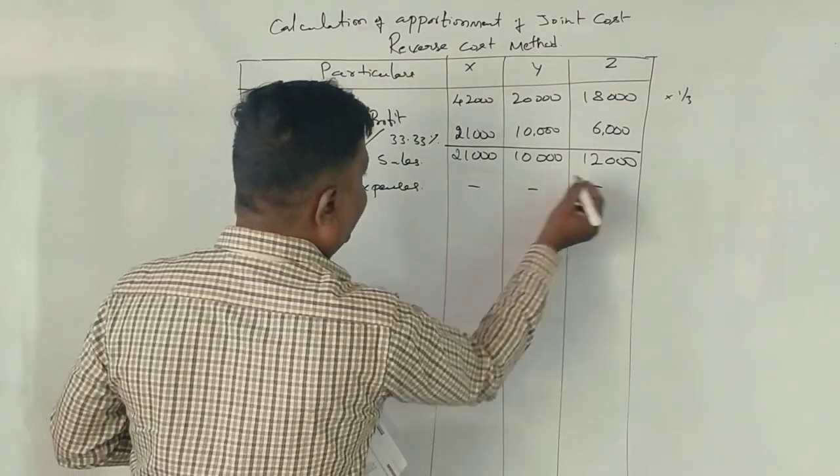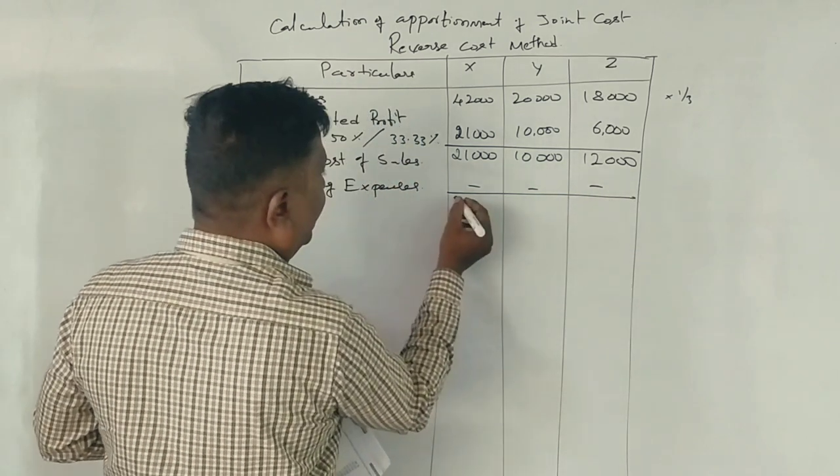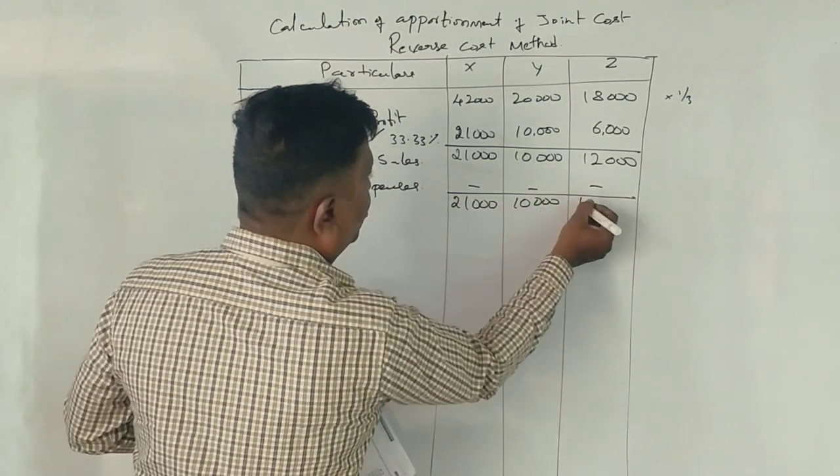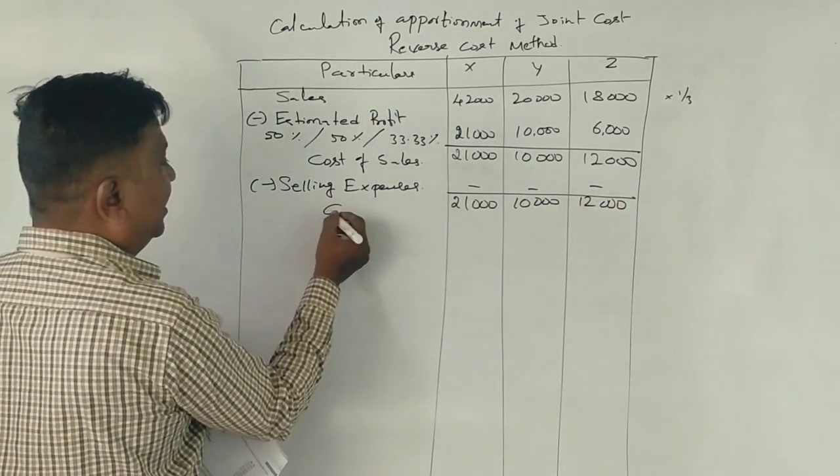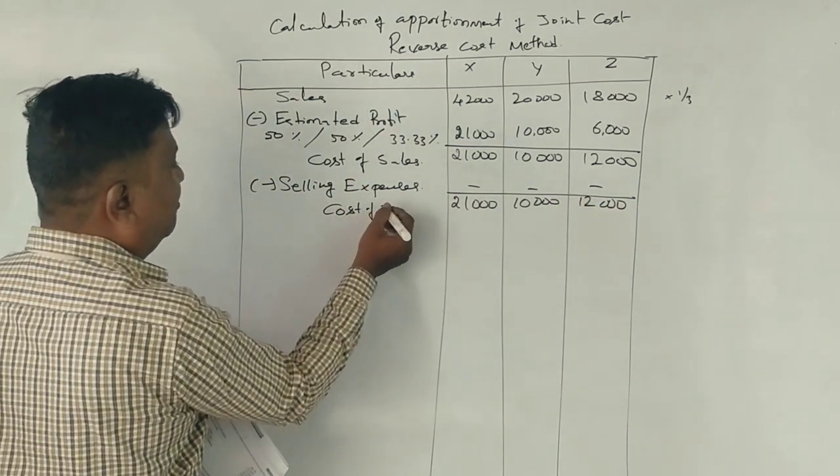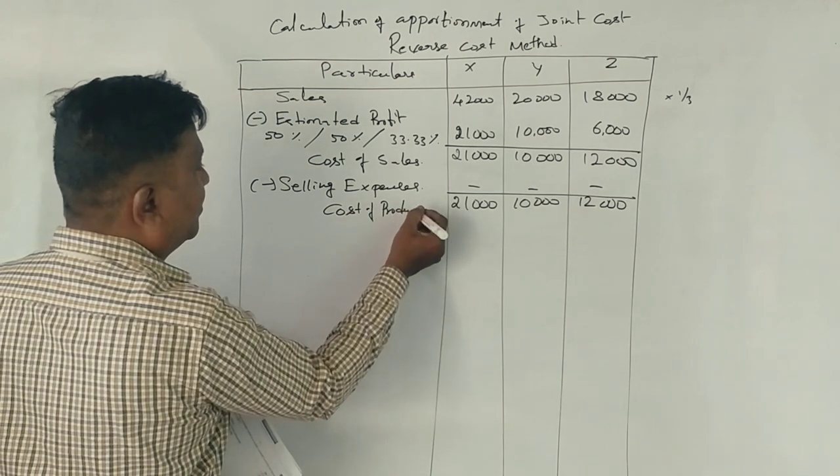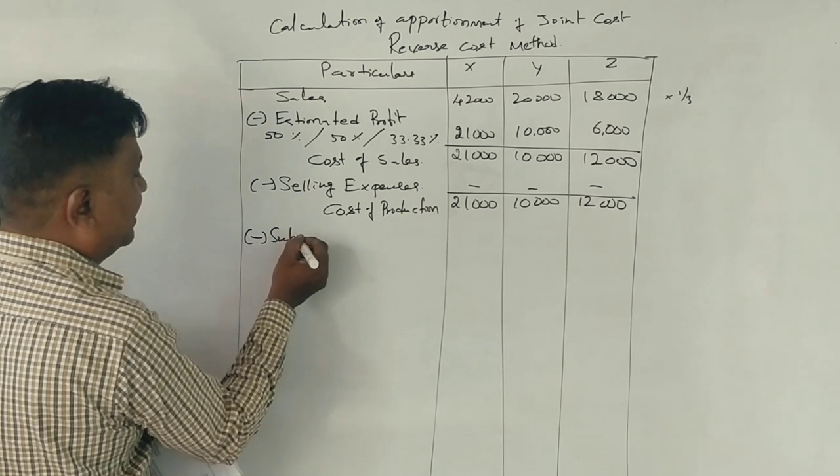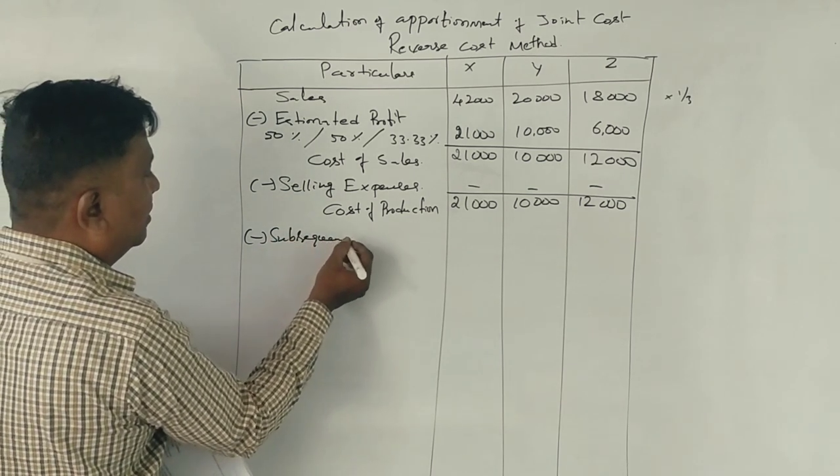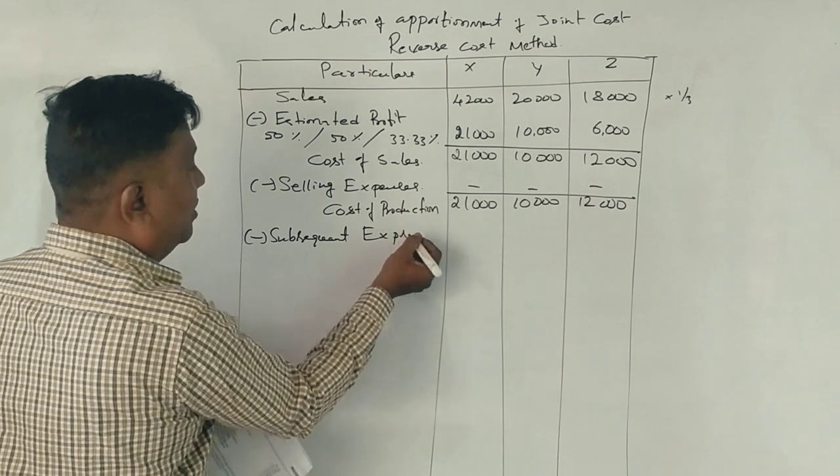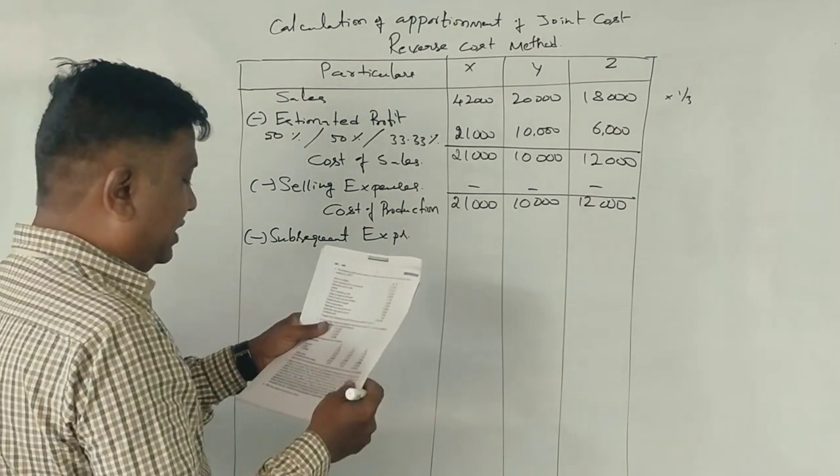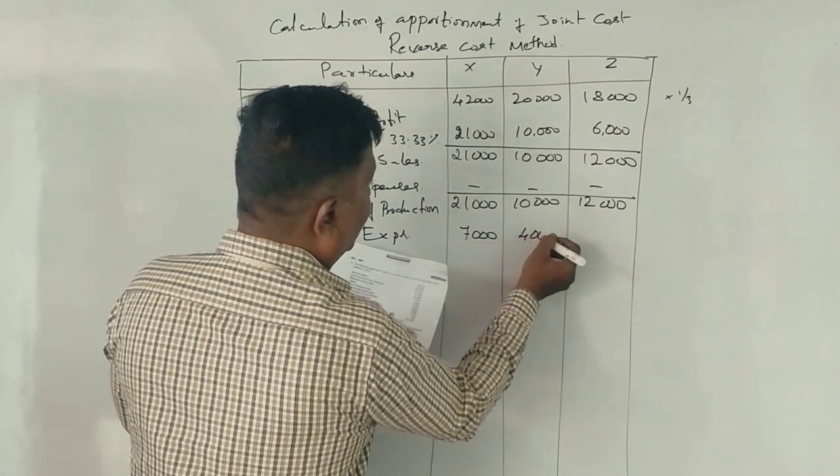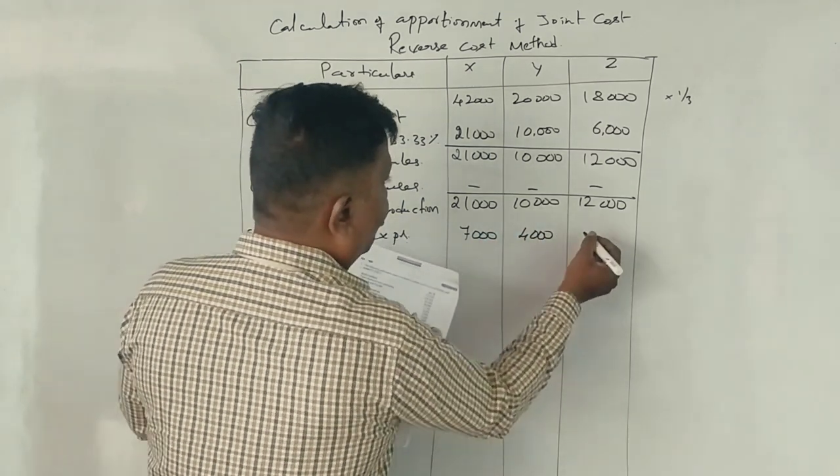Now, the selling expense is 10,000, 12,000. What is this? Cost of production. Is it only subsequent expenses? So, subsequent expenses. Product X, Y, Z - 7,000, 4,000, and 5,000.